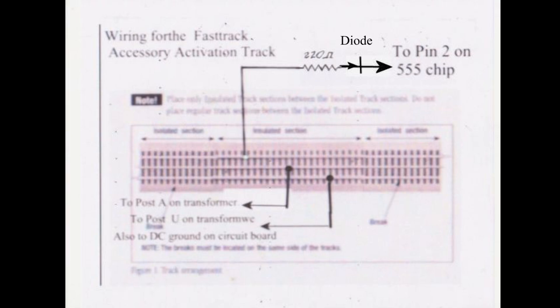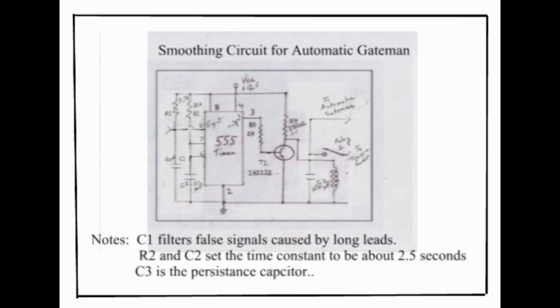Here is the smoothing circuit for the automatic gateman accessory when used with the Lionel Fast Track accessory activation track. Its main components are the 555 timing chip, an NPN transistor, and a relay.